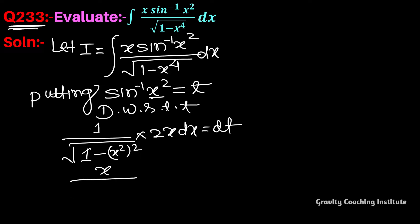So x upon under root 1 minus x to the power 4 dx equal to half dt.